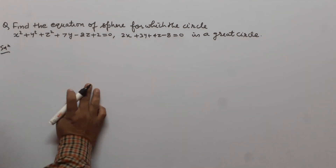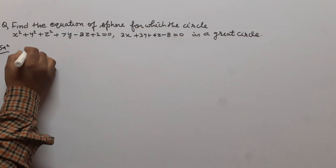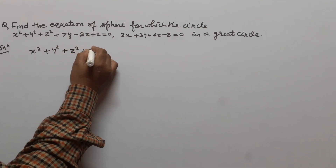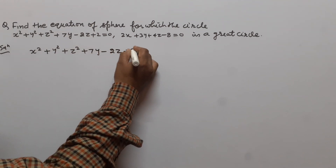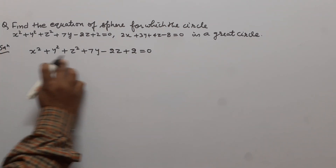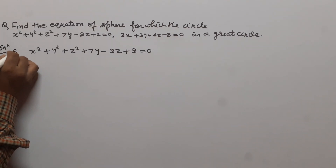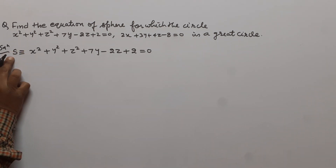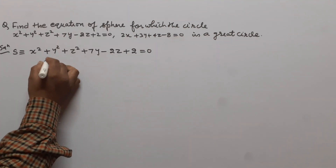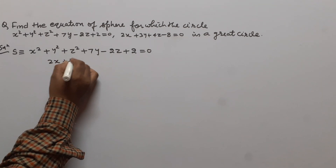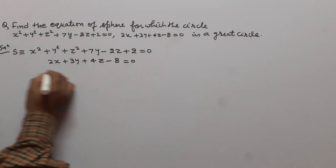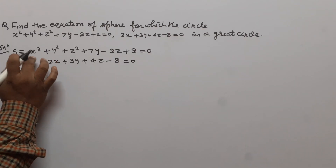Here x² + y² + z² + 7y - 2z + 2 = 0 — this is the equation of a sphere, which we call S. And 2x + 3y + 4z - 8 = 0 — this is the equation of the plane, which we call P.